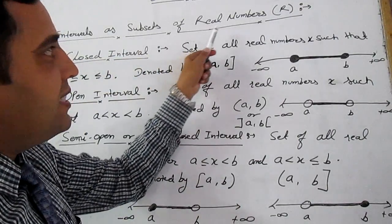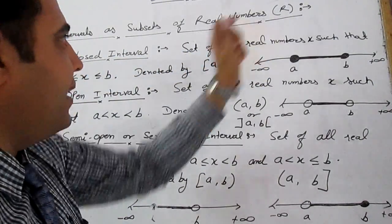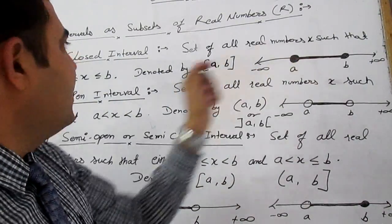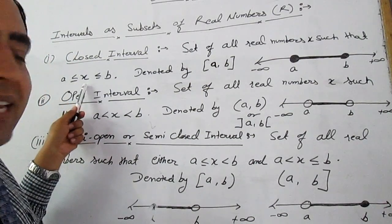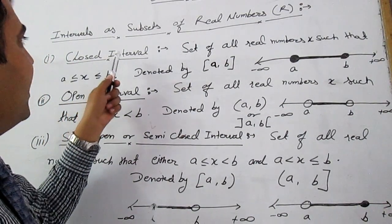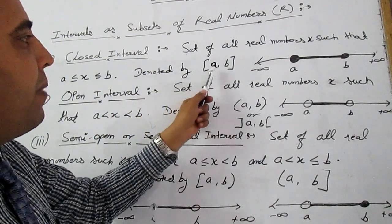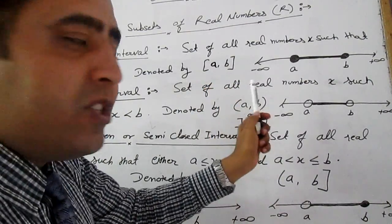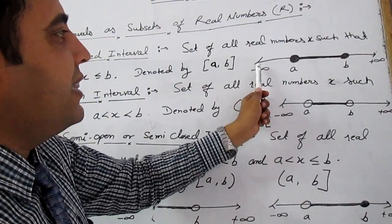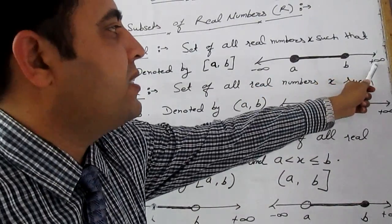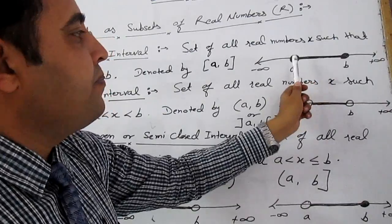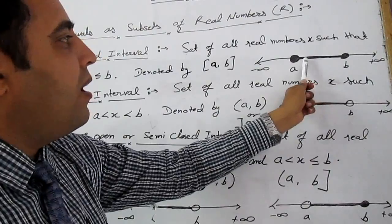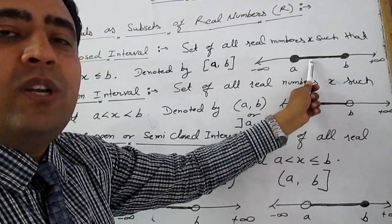Intervals as subsets on real numbers. The first one is the closed interval: the set of all real numbers x such that a is less than or equal to x is less than or equal to b. It is denoted by [a, b] enclosed within big brackets. On the number line, from minus infinity to plus infinity, both endpoints a and b are included in the interval, along with all elements between them.